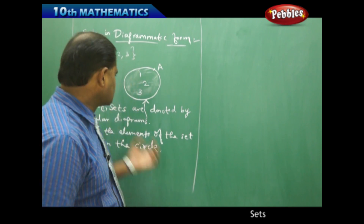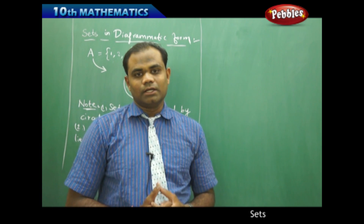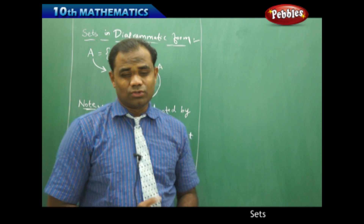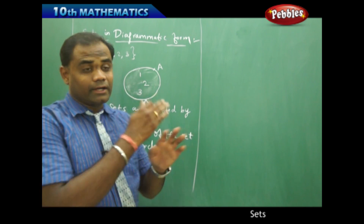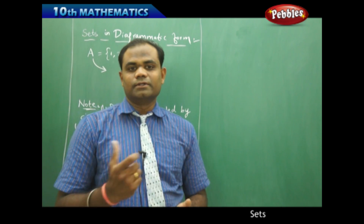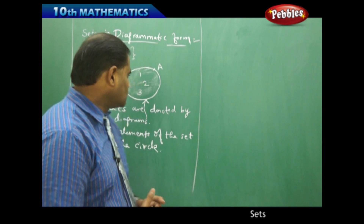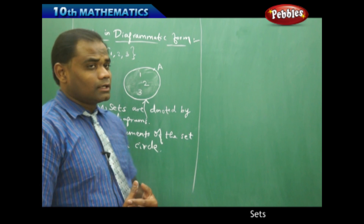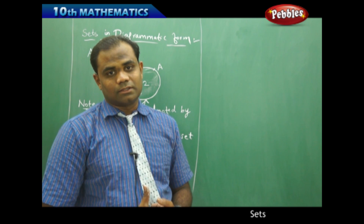For a finite set, I have finite elements inside the circle in the diagrammatic form. If there are infinite elements, there will also be infinite elements inside the circle, covering the entire area of the circle considered for the given set. Now comes the question of how we understand the infinite set as related to the universal set.